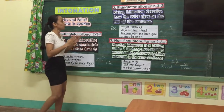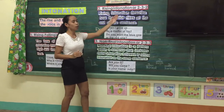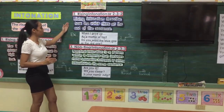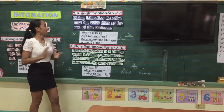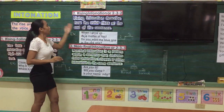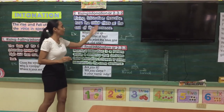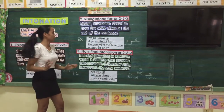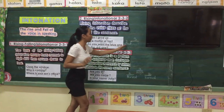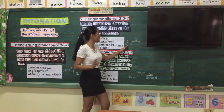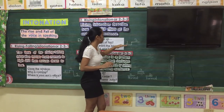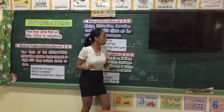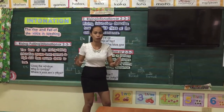Let's proceed to rising intonation or 2-3-2. Rising intonation describes how the voice rises at the end of the sentence. Here is the pattern of rising intonation: 2 is considered the middle tone, and 3 is the highest tone.